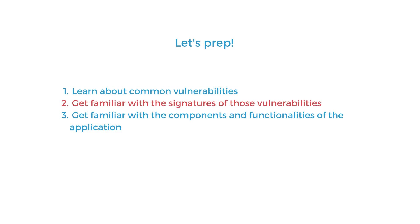If you did not build the application yourself, try to get familiar with the functionalities and components of the application. Figure out who its users are, what each user can do, what kind of data the application is processing, and what are the business impacts of each feature. This will help you prioritize your analysis, because if you cannot audit the entire code base manually, you should start with the parts that pose the highest risk to the application's users and its business.